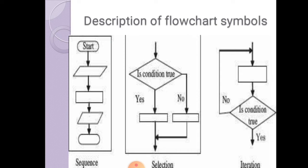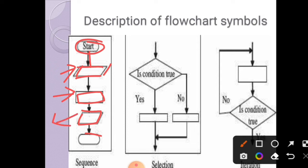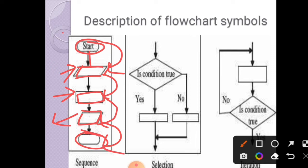A flowchart has different structures in terms of sequence, selection, and iteration. The first structure is sequence — sequence means one after another. First we start the flowchart, then take input, then process, then output to the user, then stop. When the flowchart flows from top to bottom in order, this is known as sequence.